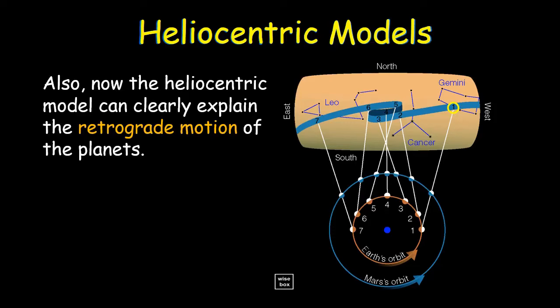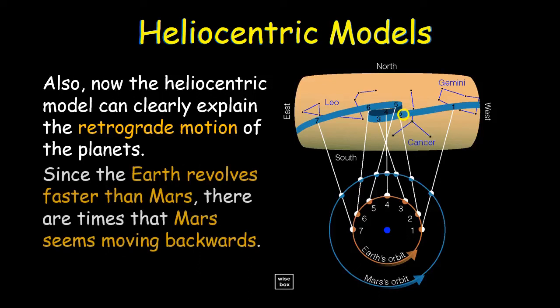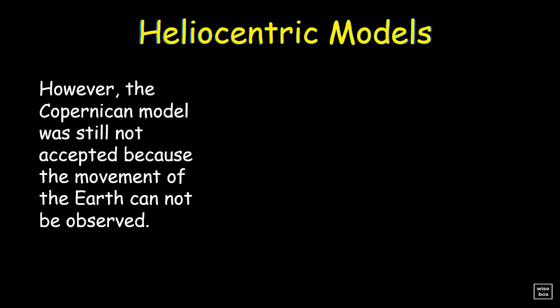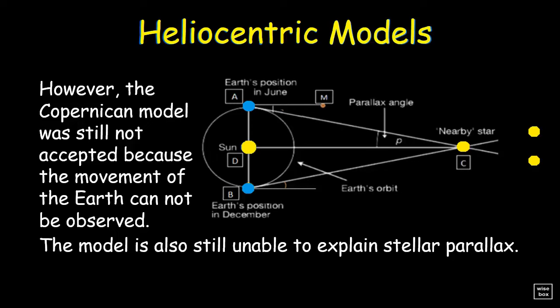Also, now the heliocentric model can clearly explain the retrograde motion of the planets. Since the Earth revolves faster than Mars, there are times that Mars seems moving backwards. However, the Copernican model was still not accepted because the movement of the Earth cannot be observed. The model is also still unable to explain stellar parallax.